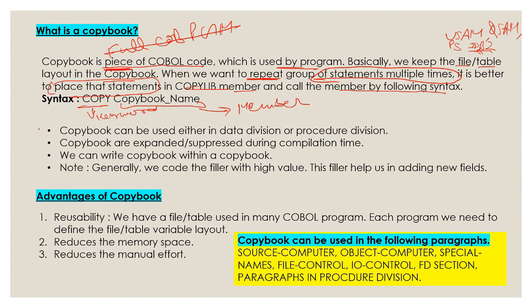What are the features of the copybook? A copybook can be used either in the data division or in the procedure division. In the data division we have the working storage section and the linkage section. Copybooks are expanded or suppressed during compilation time — you can see this in the spool after compiling the program. We can also write a copybook within a copybook.